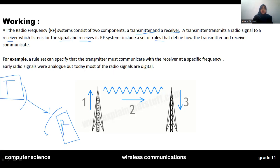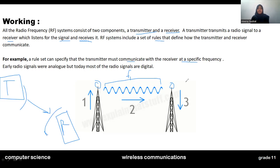The transmitter must communicate with the receiver at a specific frequency. We need to transmit the signal from one point to another. The frequency of the transmitter should match the frequency of the receiver. If the frequencies match, then the transmitter and receiver will be able to communicate.